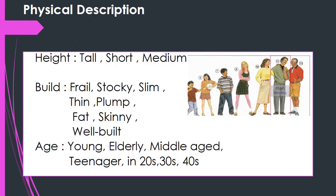At the beginning, we describe him or her physically. We have six points of physical description. The first point is height — some people are short, some people are medium, some people are tall. When you look at a person, we decide whether he is short, tall, or medium height.